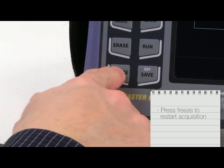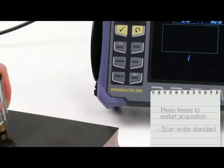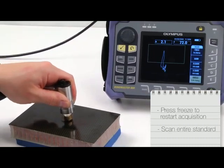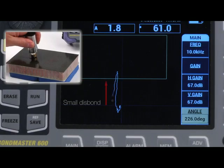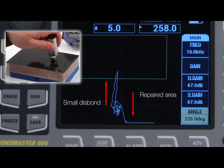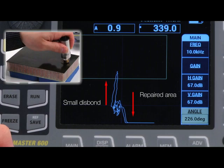Press Freeze again to restart acquisition and scan the entire standard. In this example, the small disbond goes upward on the screen while a repaired area goes down, enabling indications to be easily identified.